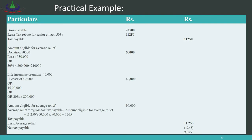For the donation: the person donated rupees 50,000, and the rule requires taking the lower of the donation amount or 30% of taxable income. The taxable income is rupees 8,00,000, so 30% equals rupees 2,40,000. The lower of 50,000 and 2,40,000 is rupees 50,000 — this is the amount eligible for average relief for the donation. For life insurance premium: the person paid rupees 40,000. The rule requires taking the lowest of: the premium paid (40,000), rupees 15,00,000, or 20% of taxable income (20% of 8,00,000 = 1,60,000). The lowest is rupees 40,000.